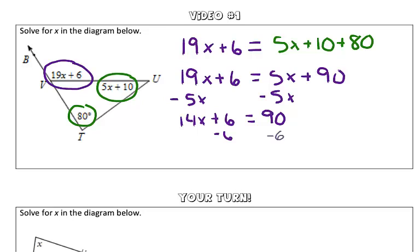Subtract 6 from both sides to get x on one side by itself. So 14x is equal to 84. To get x by itself, we're going to divide both sides by 14, again using inverse operations. So we get x is equal to 6.